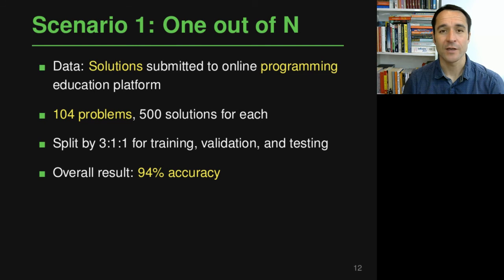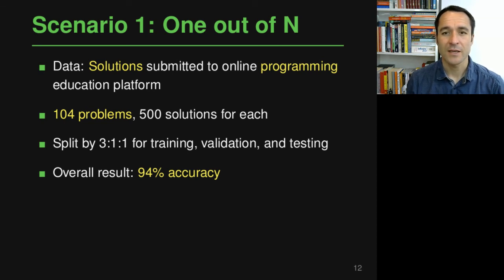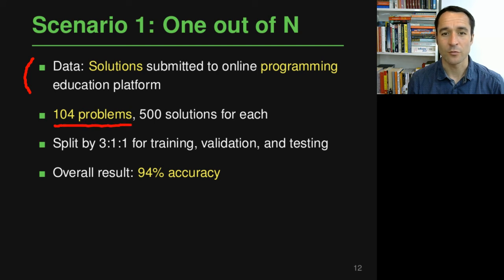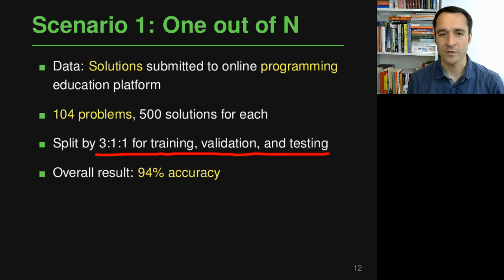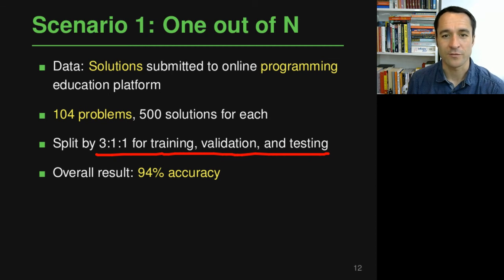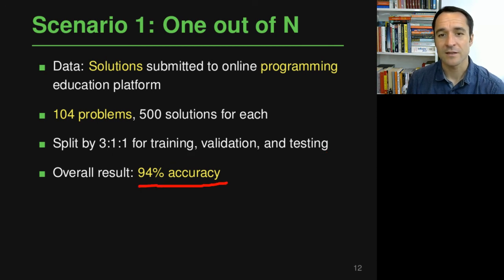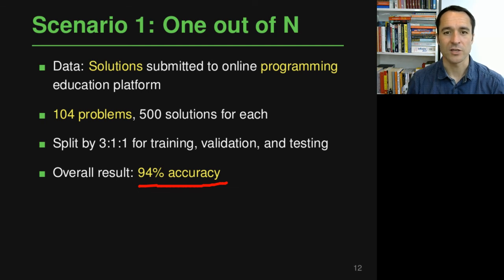For the first scenario, the authors use solutions submitted to an online programming education platform where people solve 104 problems. They have 500 solutions per problem and split the data into training, validation, and test sets using a 3:1:1 ratio — 60% for training, 20% for validation, and 20% for testing. The trained model achieves an overall 94% accuracy in predicting which of the 104 programming problems a solution addresses.